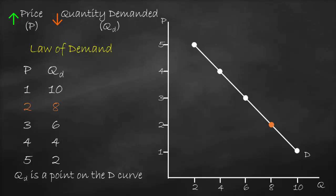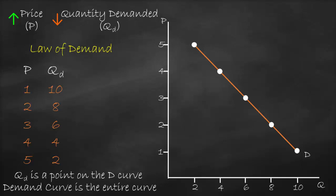Then what do we mean by the demand curve? The demand curve represents the entire demand schedule — the whole demand table — which means different quantities at different prices. From the graph, the whole curve is called the demand curve. It's very important that you are able to differentiate between quantity demanded and demand: any point on the demand curve is called quantity demanded, while the entire curve is called the demand curve.